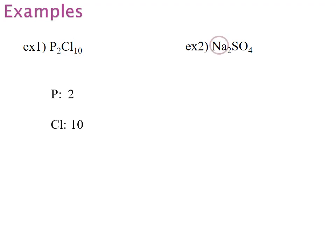In sodium sulfate, I find Na, I find S, and I know the S is not with the O because the O is uppercase, so they cannot be together. So S, and I also have O. Na: there are 2 of them. S is not followed by a number, so there is only 1 sulfur. And O: there are 4 oxygens.